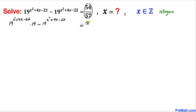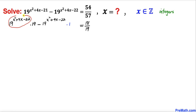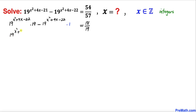The fraction on the right-hand side reduces to 18 divided by 19. Now let's focus on the left-hand side — we can write the second term as times 1, which makes no difference. We can see that 19 to the power of (x squared plus 4x minus 22) is common between both terms, so we factor it out. Inside the parentheses we are left with 19 minus 1, which gives us 18 divided by 19 on the right-hand side.